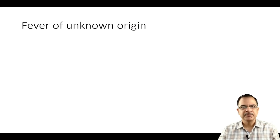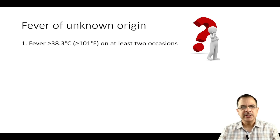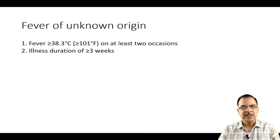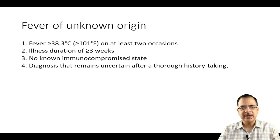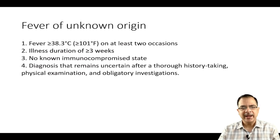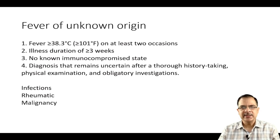The third group is fever of unknown origin. This means fever of more than 101°F on two occasions, duration of fever more than or equal to three weeks, no known immunocompromised state — meaning the patient is not HIV positive and is not taking any chronic immunosuppressive agents — and the diagnosis remains uncertain after thorough history taking, physical examination, and obligatory investigations. Causes include infections, malignancy, rheumatic diseases, and miscellaneous causes.